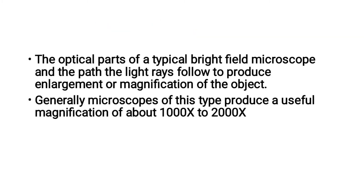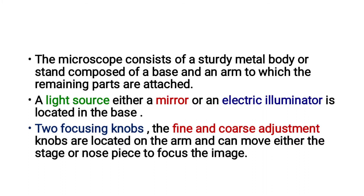The optical parts of a typical bright field microscope direct light rays to produce an enlarged and magnified image. Generally, microscopes of this type produce a useful magnification of about 1000x to 2000x. The microscope consists of a metal body or stand composed of a base and an arm to which the remaining parts are attached.